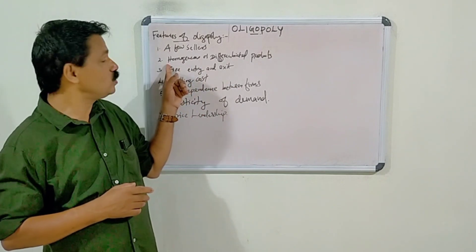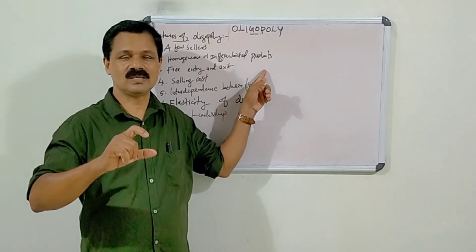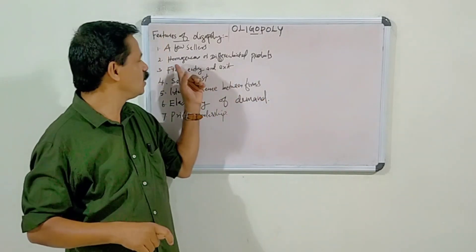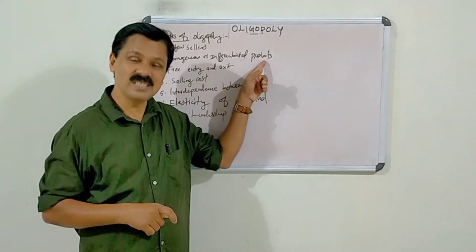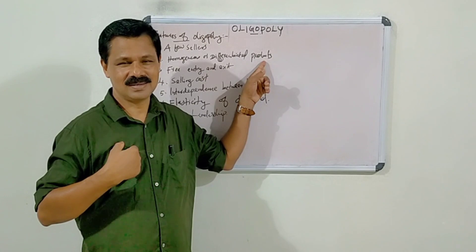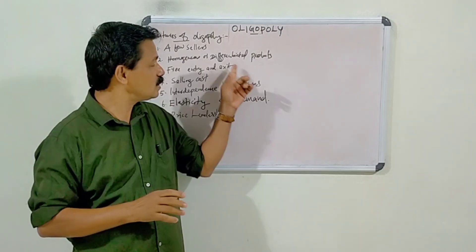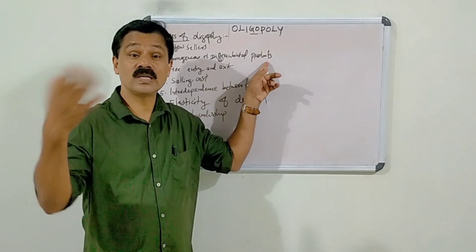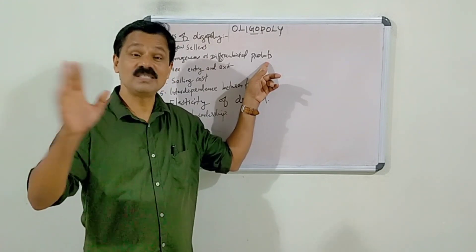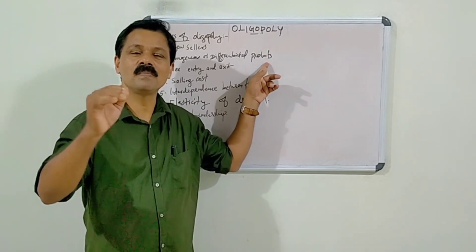Under oligopoly, the products produced by a few firms can be homogeneous or differentiated. By homogeneous products we mean products that are similar or identical in all aspects. Differentiated products refers to products differentiated by giving different brand names, different design, different types of advertisement, publicity, different prices, etc.